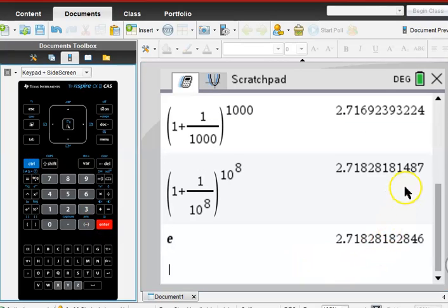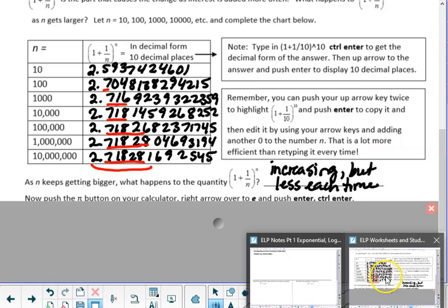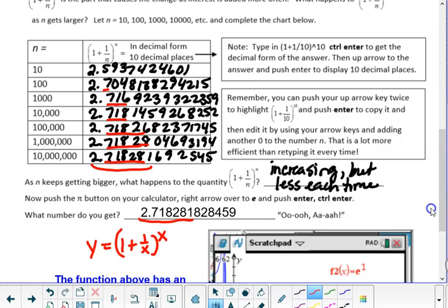Do a Control-Enter, and E is this number here. If you keep making this number, these two numbers, bigger and bigger, this expression turns into the number E.